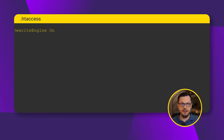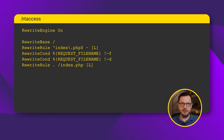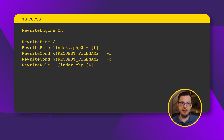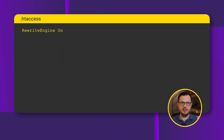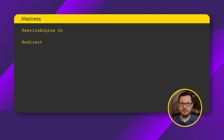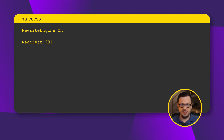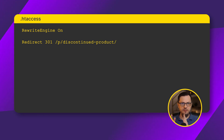Before editing your .htaccess file, it is always a good idea to make a backup of the current one because the file is very sensitive and it can cause many troubles if mistakes are made. All instructions should be written under the line which enables the rewrite engine. Here's how you can set up a 301 redirect in .htaccess: you first write the word redirect, then the type of the redirect — 301, 302, or something else — then the relative URL which needs to be redirected, followed by the relative URL where it should be redirected to.